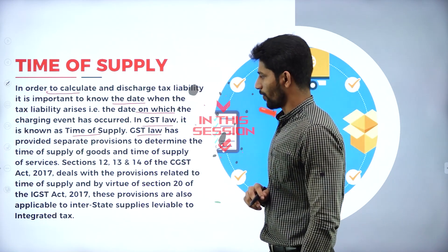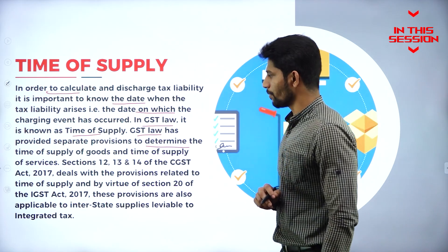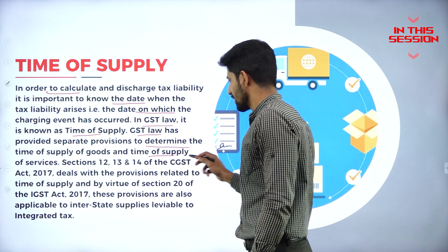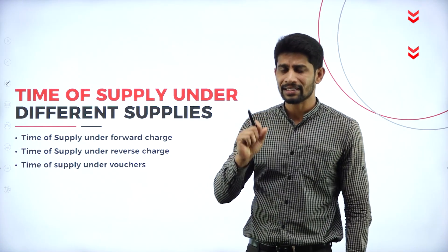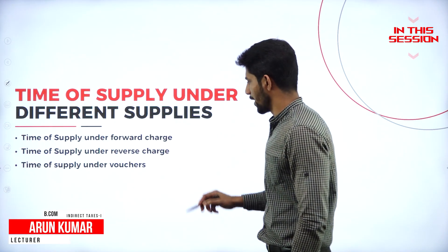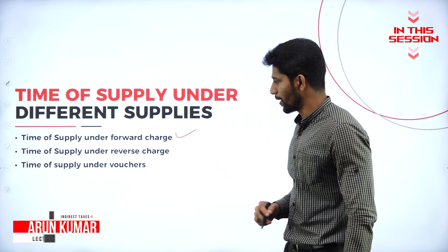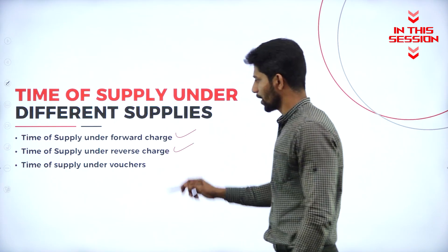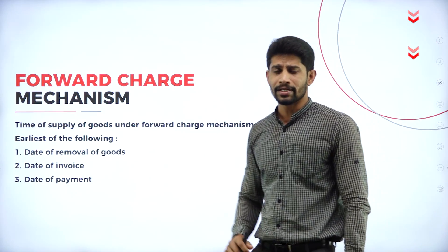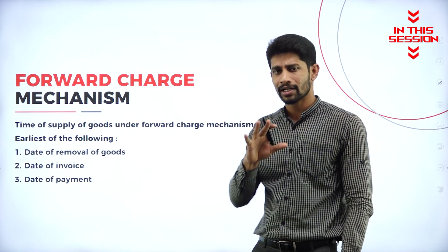GST law has provided separate provisions to determine the time of supply of goods and the time of supply of services. Mainly we have three types of supply. The first one is time of supply under forward charge, the second one is time of supply under reverse charge, and time of supply under vouchers. The seller is going to be a registered dealer who collects the tax amount and remits the tax to the government.